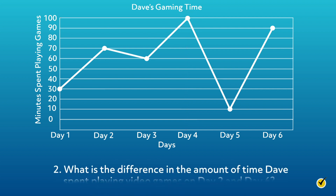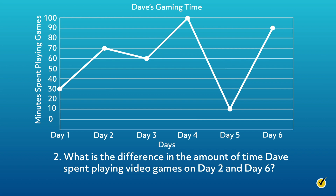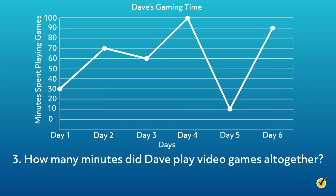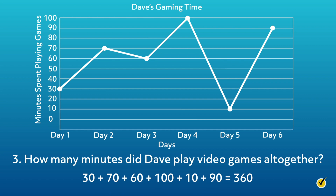What is the difference in the amount of time Dave spent playing video games on day 2 and day 6? Looking at the markers, the graph shows that Dave played games for 70 minutes on day 2 and 90 minutes on day 6. The difference is calculated by subtracting. Since 90 minus 70 equals 20, the difference is 20 minutes. Dave spent 20 more minutes playing video games on day 6. How many minutes did Dave play video games altogether? To find the total amount of time Dave played video games, add the amount of minutes played each day. 30 plus 70 plus 60 plus 100 plus 10 plus 90 equals 360. Therefore, Dave spent 360 minutes playing games from day 1 through day 6.